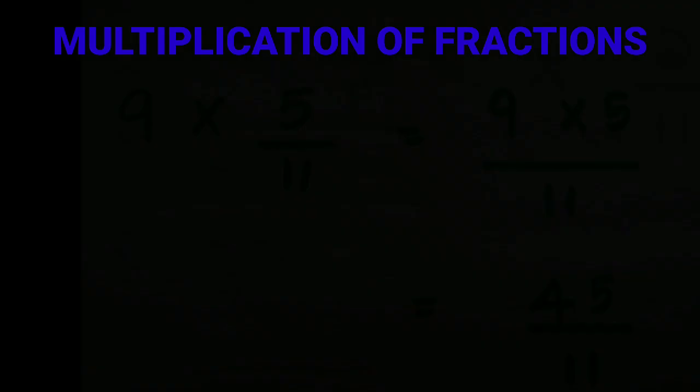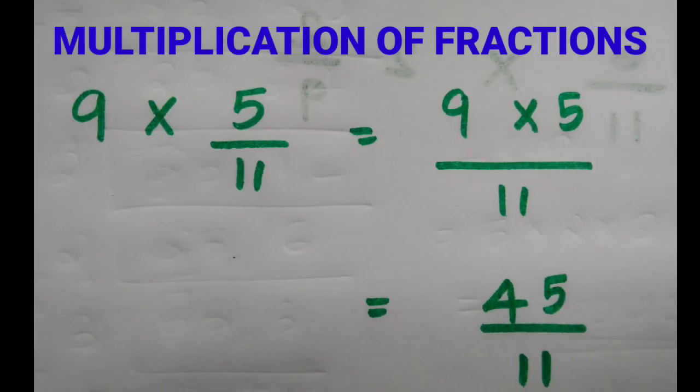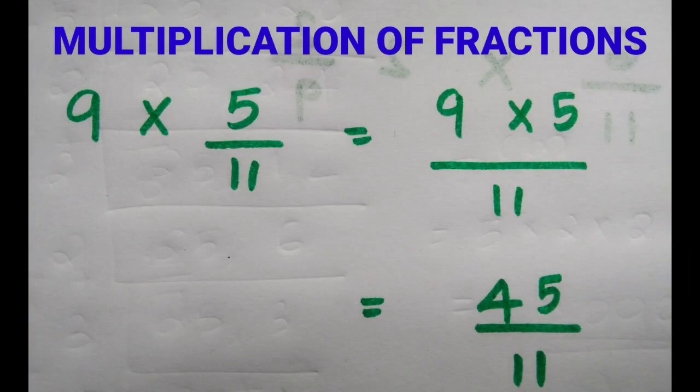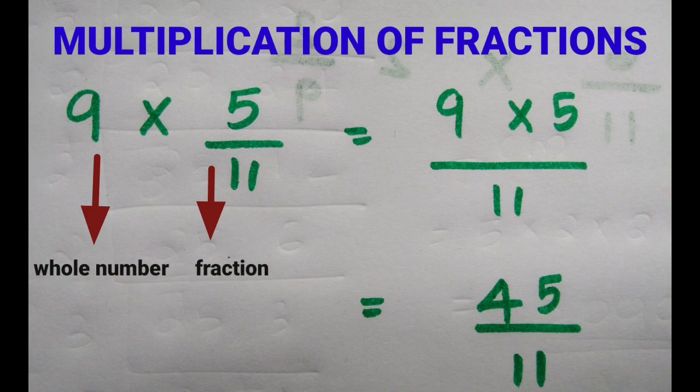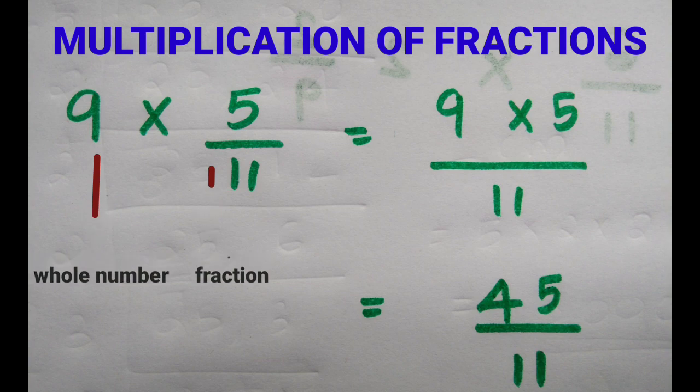Multiplication of Fractions. First one is multiplying a fraction and a whole number. Here 9 is a whole number and 5/11 is a fraction. We have 9 multiplied by 5 divided by 11.